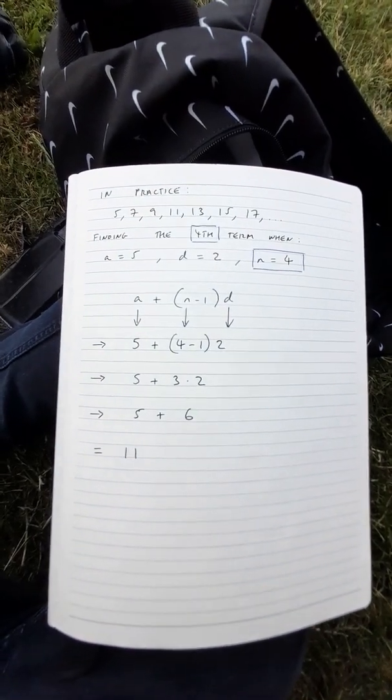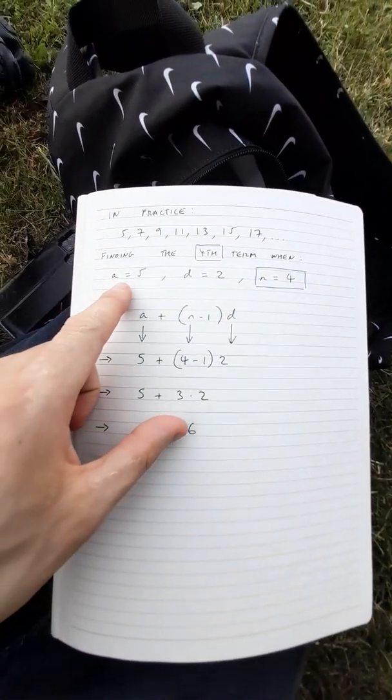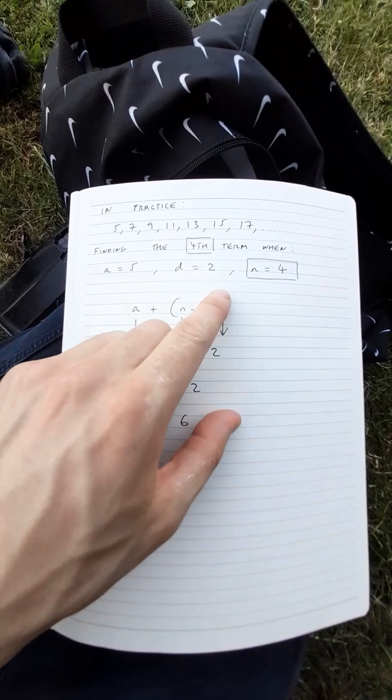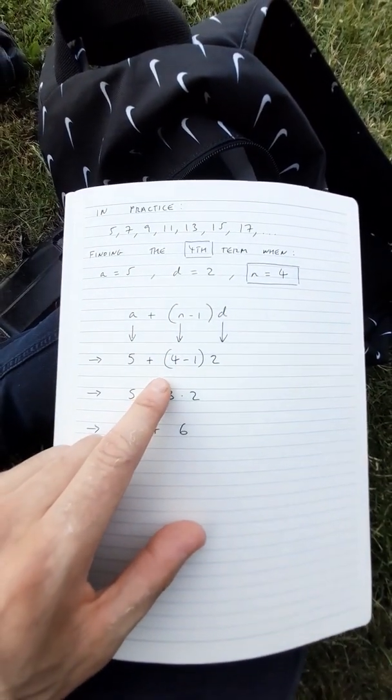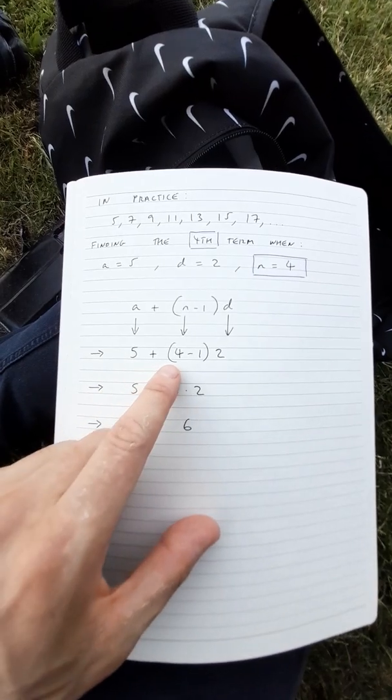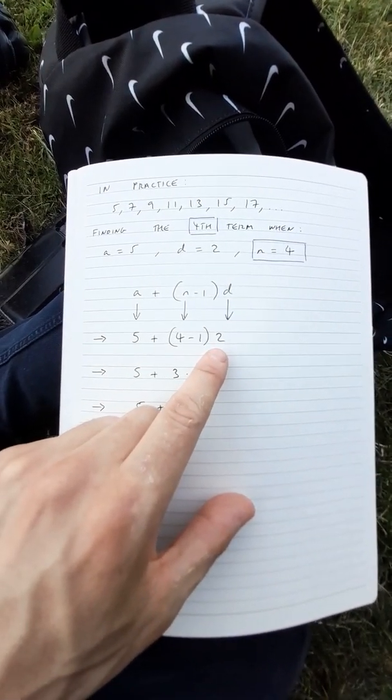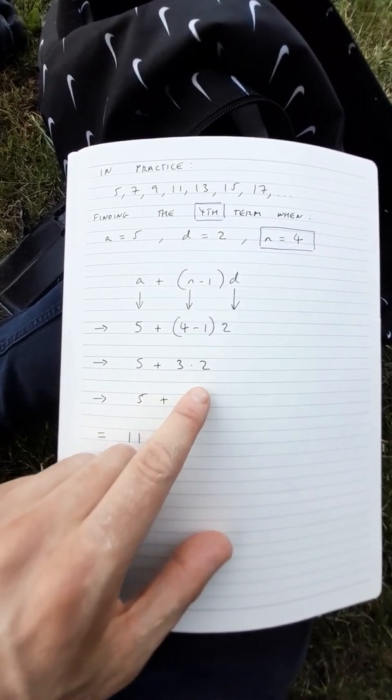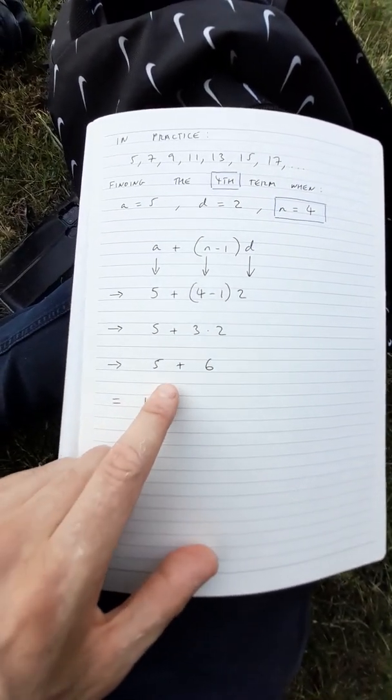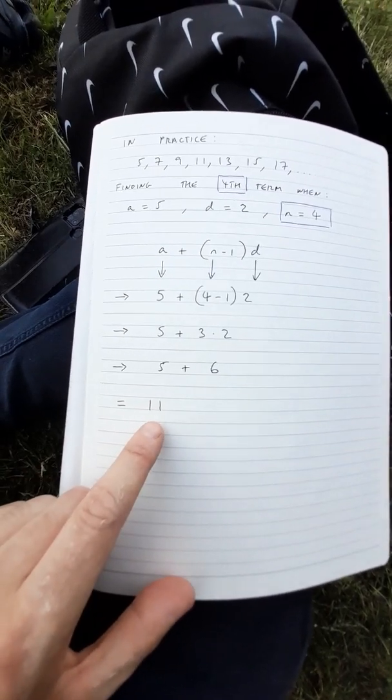How are we going to get the fourth term? We have a, we have d, and we convert n into 4. If we do this we get 5 plus 4 minus 1 multiplied by 2, which is the same as 5 plus 3 times 2 which is 5 plus 6 which is 11.